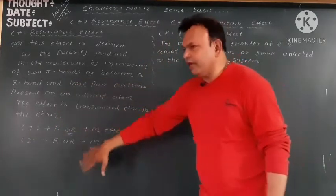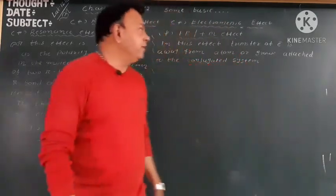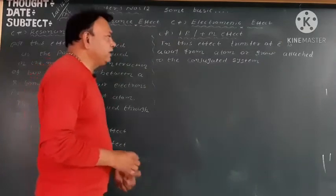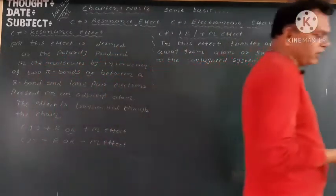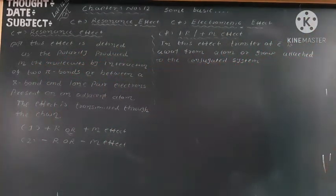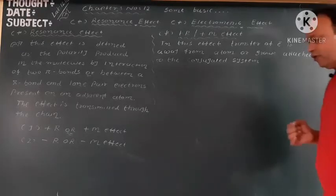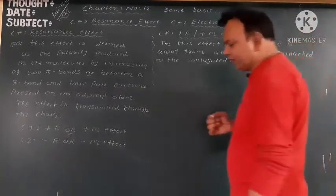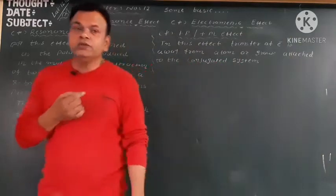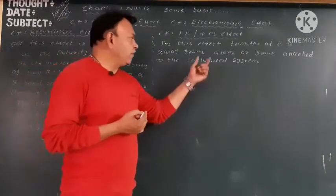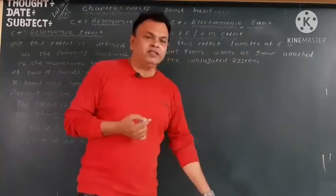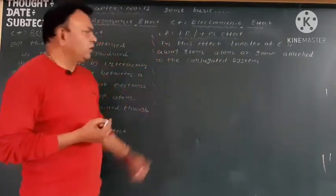In this effect, transfer of electron is away from atoms or group attached to the conjugated system. Matlab yaha pe hoga kya ki jo electron pair ho, kya hoga — dur jayegi, away from the atoms or the group attached with the conjugated system.